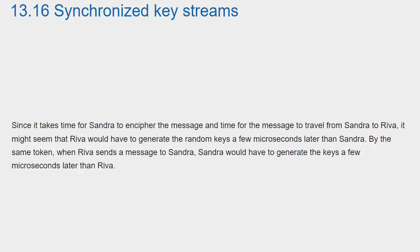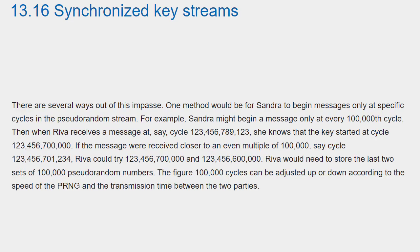Since it takes time for Sandra to encipher the message, and time for the message to travel from Sandra to Reva, it might seem that Reva would have to generate the random keys a few microseconds later than Sandra. By the same token, when Reva sends a message to Sandra, Sandra would have to generate the keys a few microseconds later than Reva. There are several ways out of this impasse.